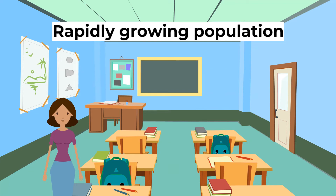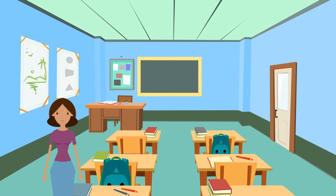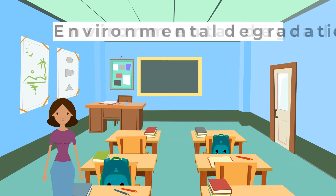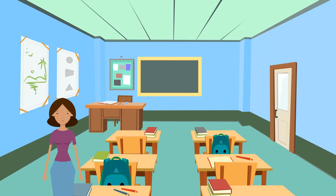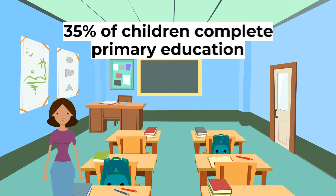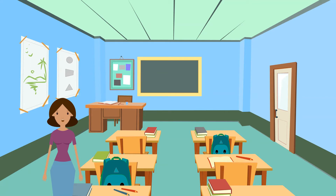With 19.4 million inhabitants, Malawi cannot support this rate of population growth. Environmental degradation and the difficult physical environment means there is limited land available for development — one third of Malawi is taken up by lakes, and unsustainable farming is damaging the land. Also, only 35 percent of children aged 11 complete primary education, meaning there are fewer people in professional roles — such as doctors, engineers, and teachers — which support development.